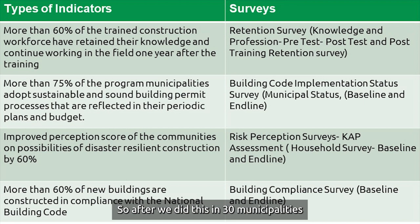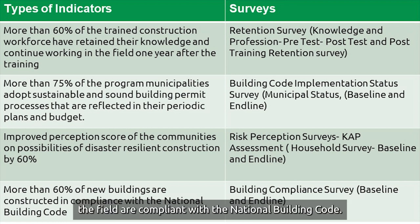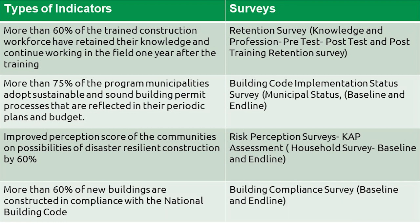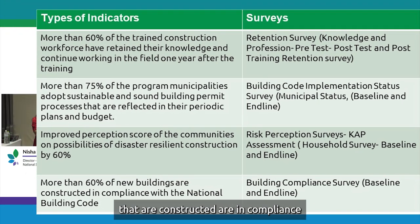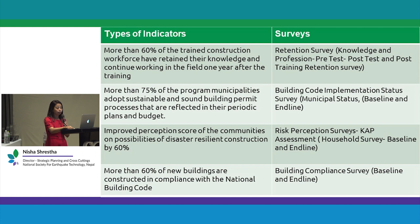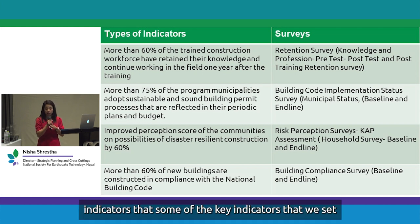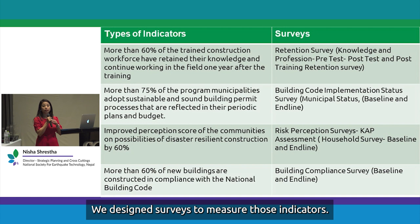After working in 30 municipalities, the ultimate goal was that buildings constructed in the field are compliant with the national building code. The indicator we set was more than 60% of new buildings constructed in compliance with the national building code. These were some of the key indicators we set for the BCIPN program, and we designed various surveys to measure those indicators.